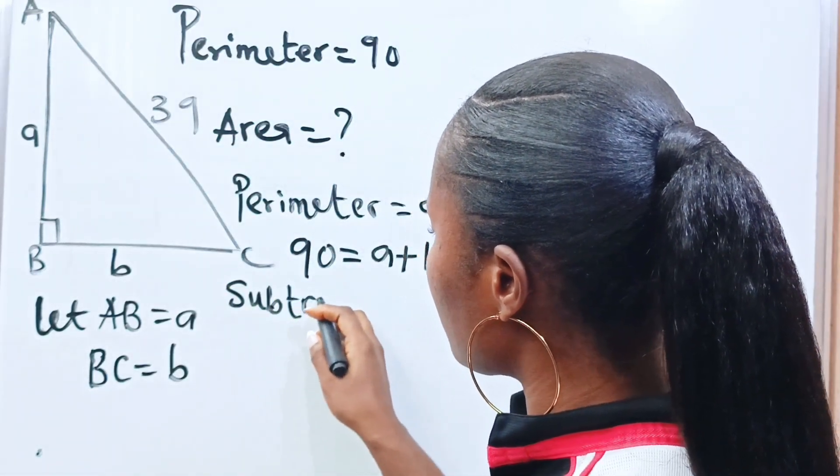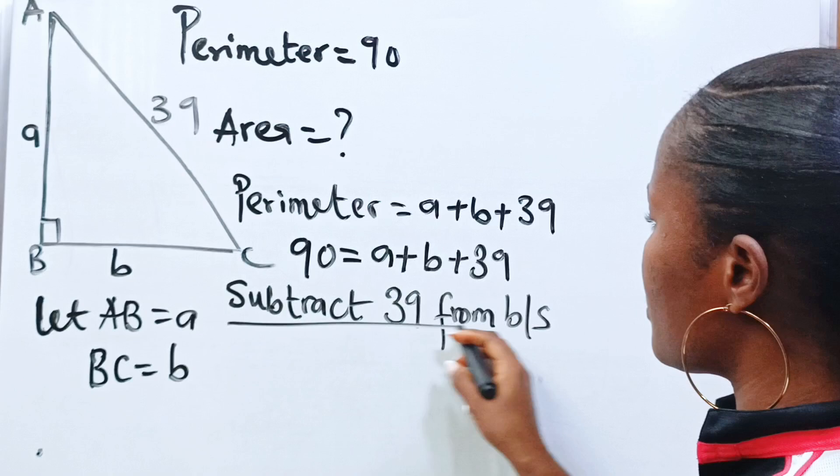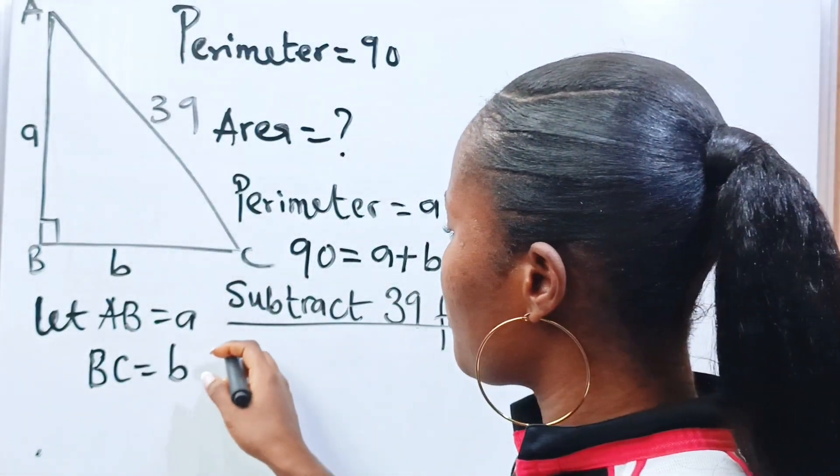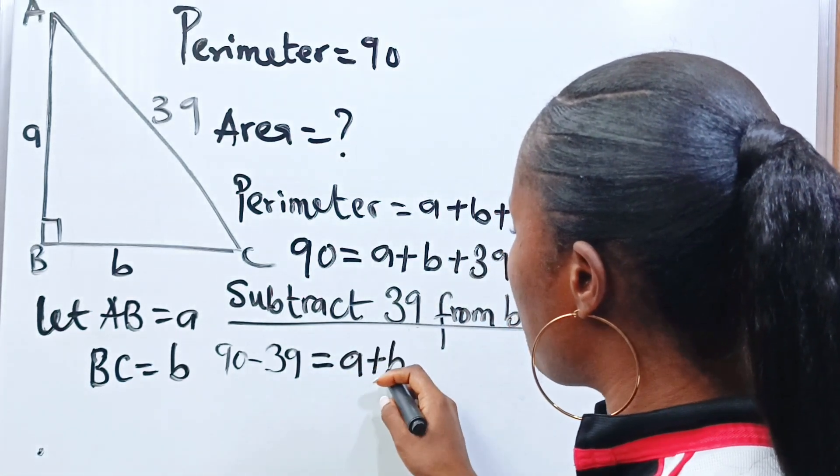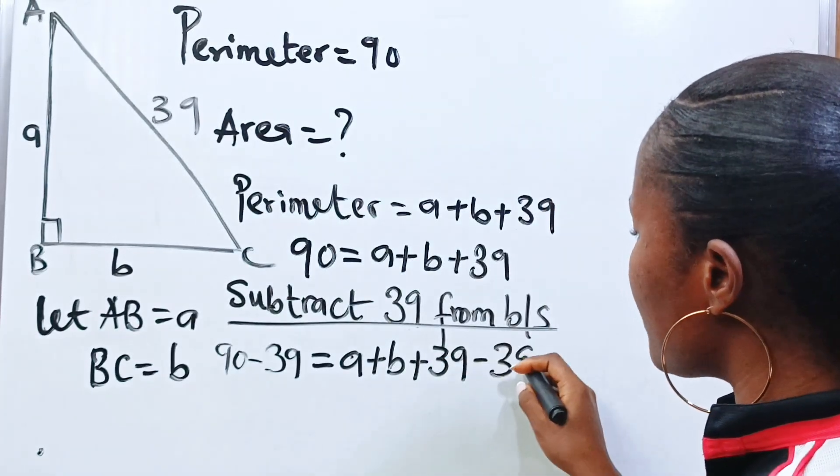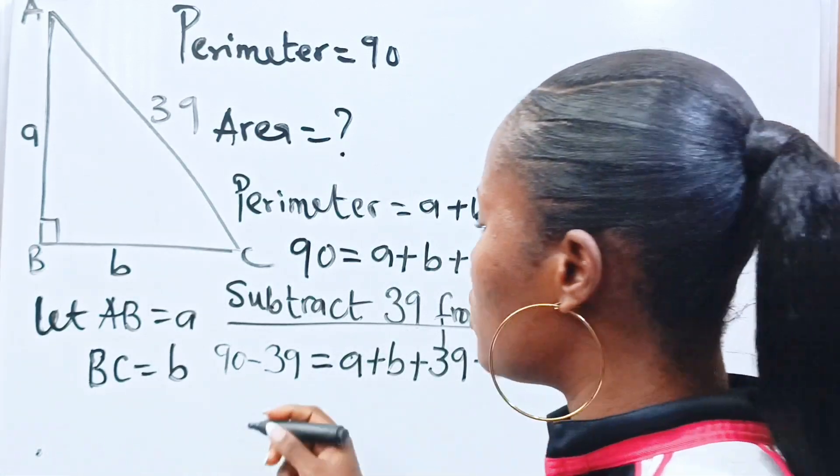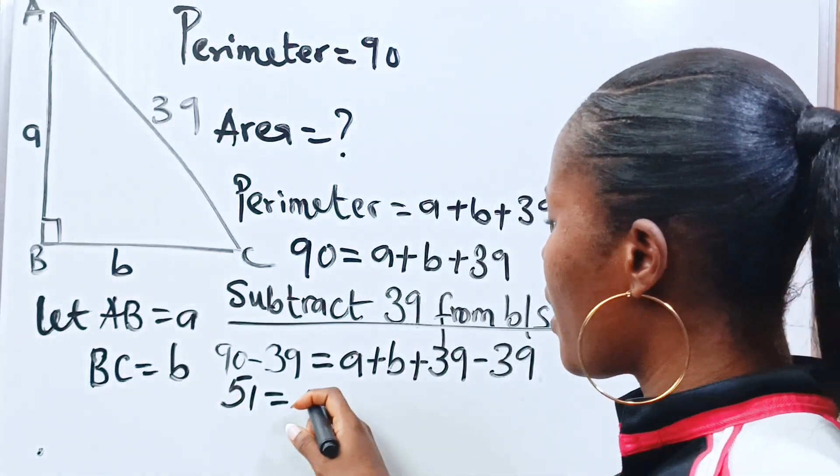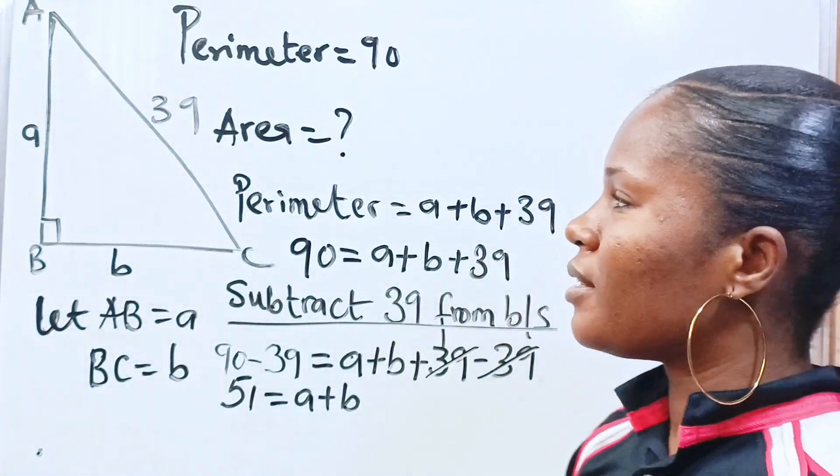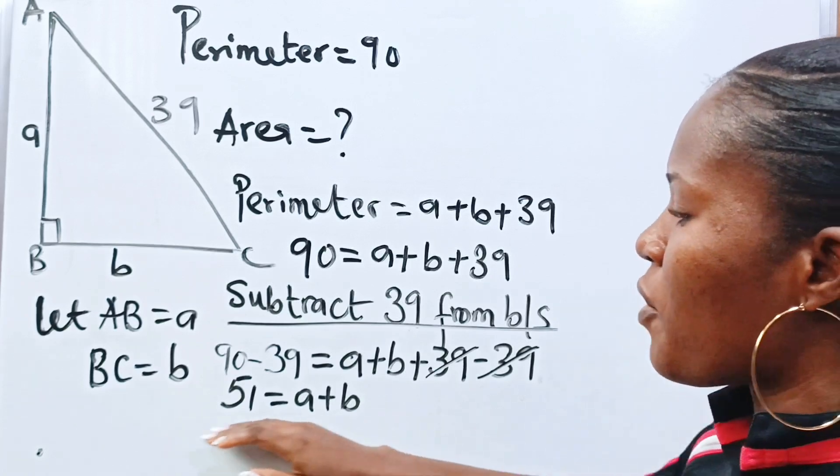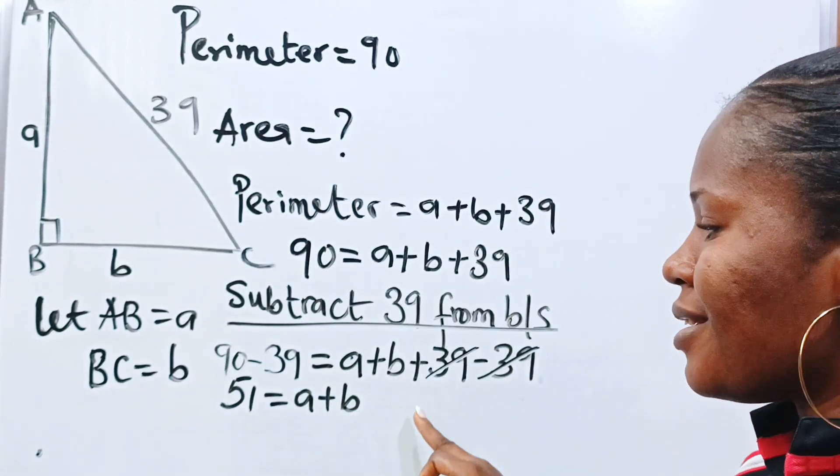Subtract 39 from both sides. If we do that, we have 90 minus 39 is equal to A plus B plus 39 minus 39. 90 minus 39 will give us 51 is equal to A plus B. So that fact that this perimeter is given means that this is very important to this question. So I'm going to write somewhere that A plus B is equal to 51.